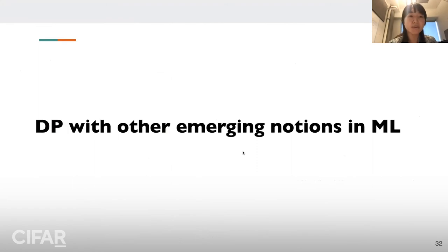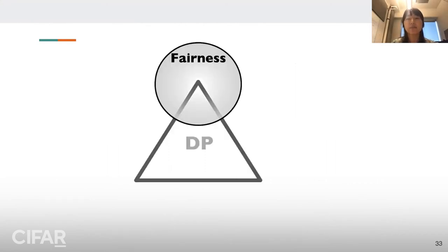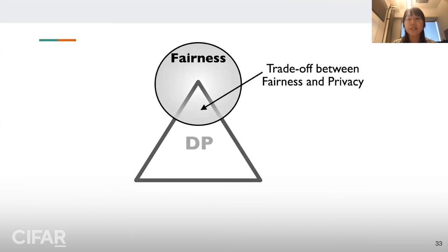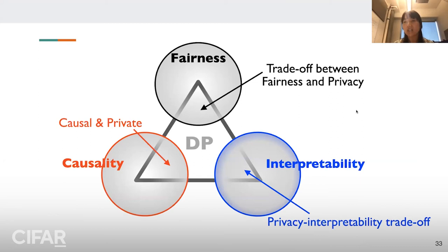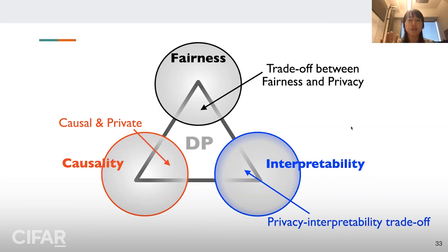In the last ten minutes, I'll discuss how differential privacy interacts with other emerging notions in ML: fairness, interpretability, and causality. These are all new research topics, and I'm giving you just the tip of the iceberg. Please refer to the suggested readings in my slides for deeper study. These are quite exciting and very different from what was studied before.